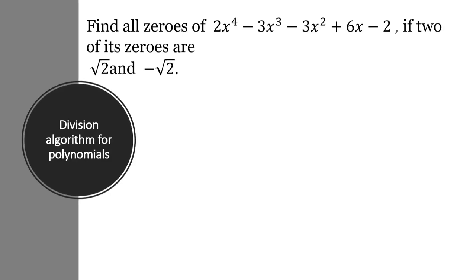Find all zeros of 2x to the power of 4 minus 3x cube minus 3x square plus 6x minus 2, if two of its zeros are square root of 2 and minus square root of 2.